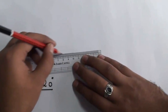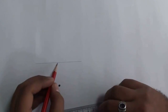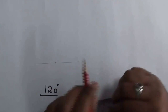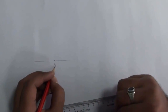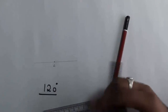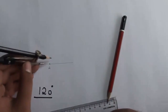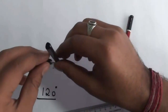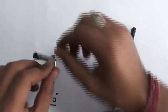Draw a straight line. Now give any point and name it A from where you want to draw the angle. Take the compass, open it a bit, put your compass on this point and draw an arc.